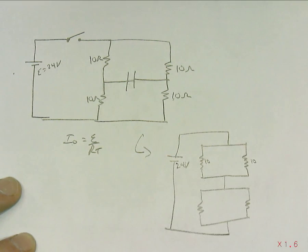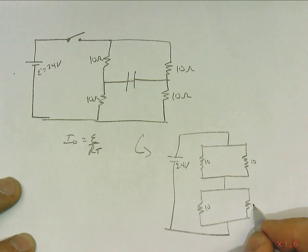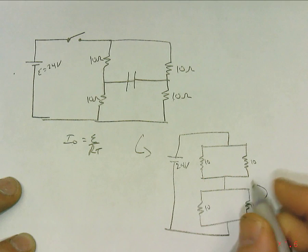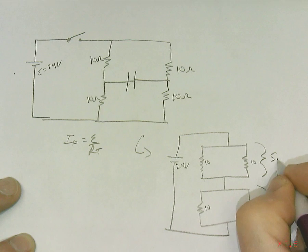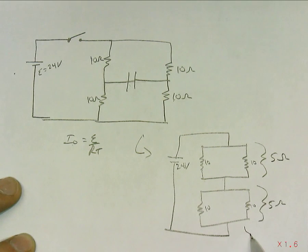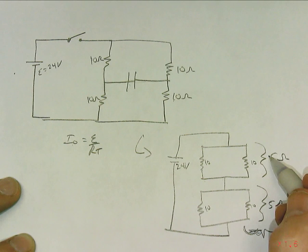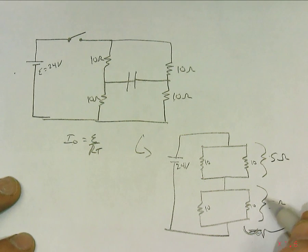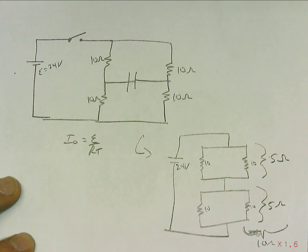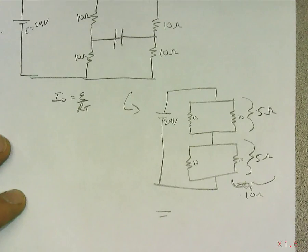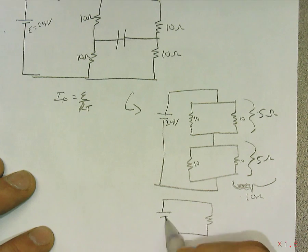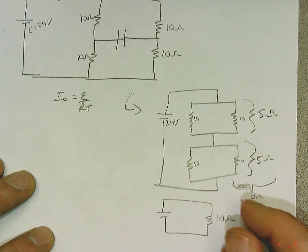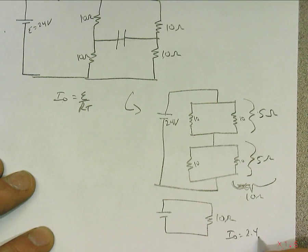So, here's 10 and 10. Of course, these together, in parallel, make 5 ohms. This together, in parallel, makes 5 ohms. And then, these are like two series 5 ohm resistors, which wouldn't be bad to draw. But that makes 10 ohms. So, in other words, in the end, what we have is simply 10 ohms. And so, I zero is 2.4 amps.